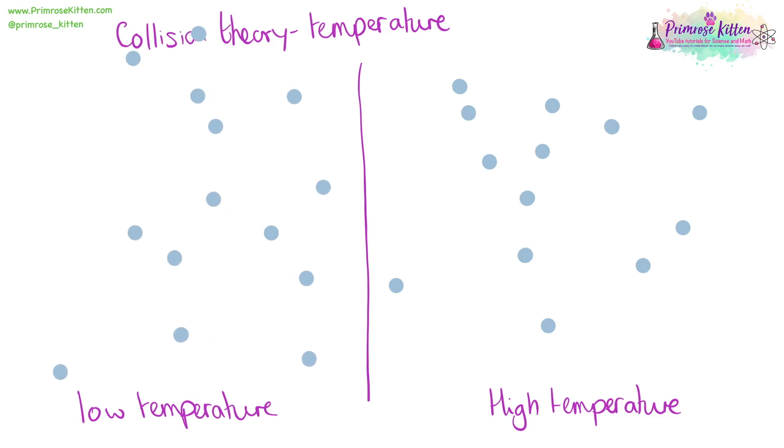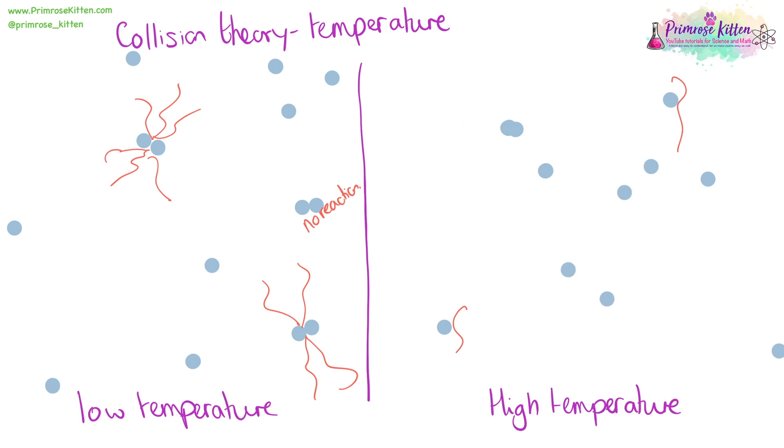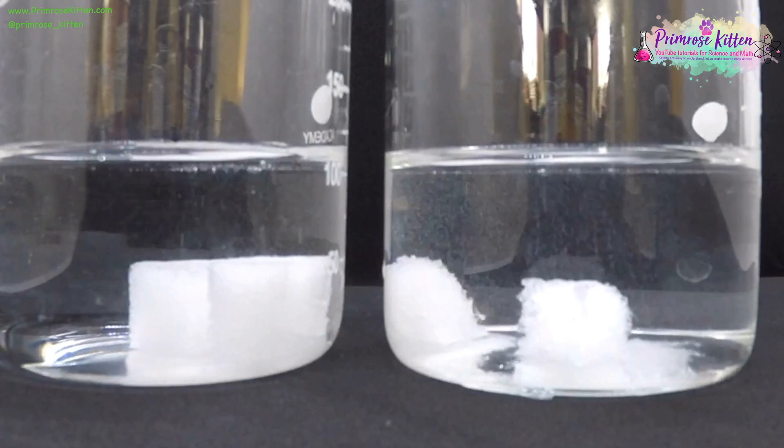When we have particles moving around at a low temperature, they're moving slowly with not much energy. When two collide, they hit each other and have a reaction, but sometimes they're going to collide and there's not going to be a reaction. When particles move around with high temperature, at high speed, with lots of energy, when things collide, you are going to get a lot of reactions taking place. Rate of reaction is going to be affected by temperature.